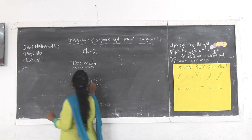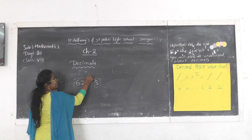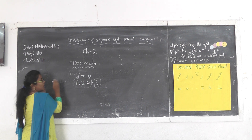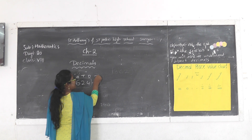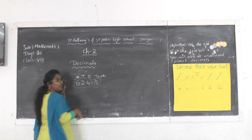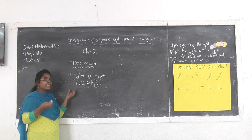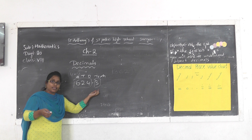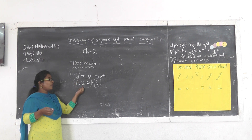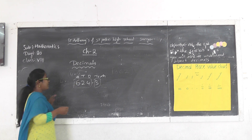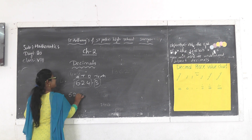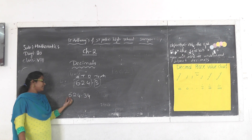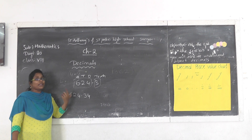So this is the decimal point. Point left side starts from 1, 10, 100, 1000, and so on. Point right side starts with the tenths position. For example, the number is 64.34 — how do we read this number?